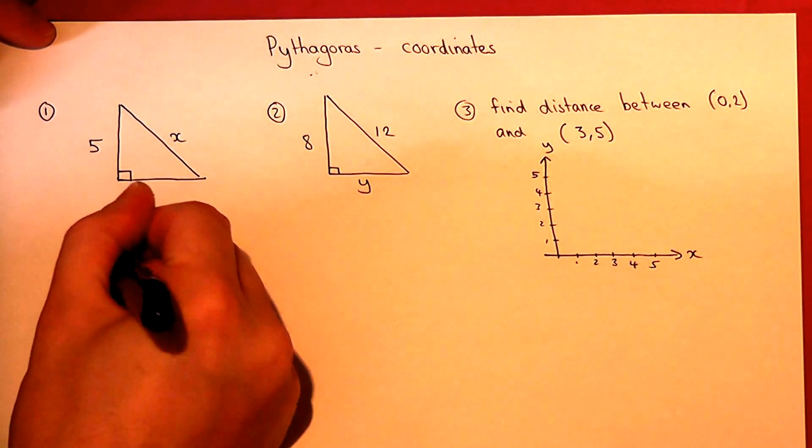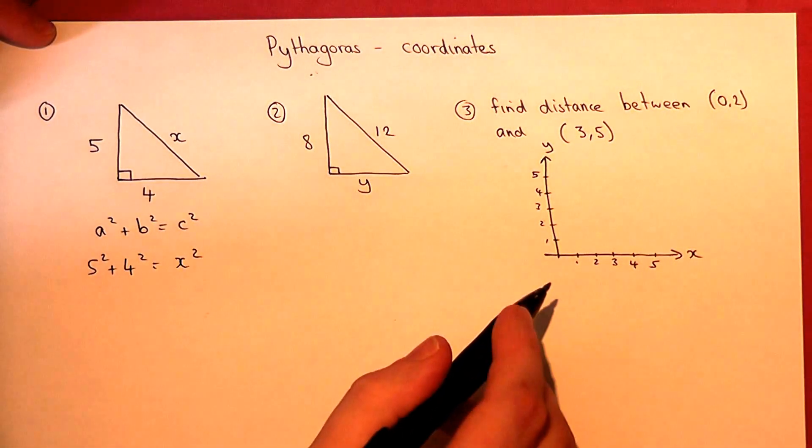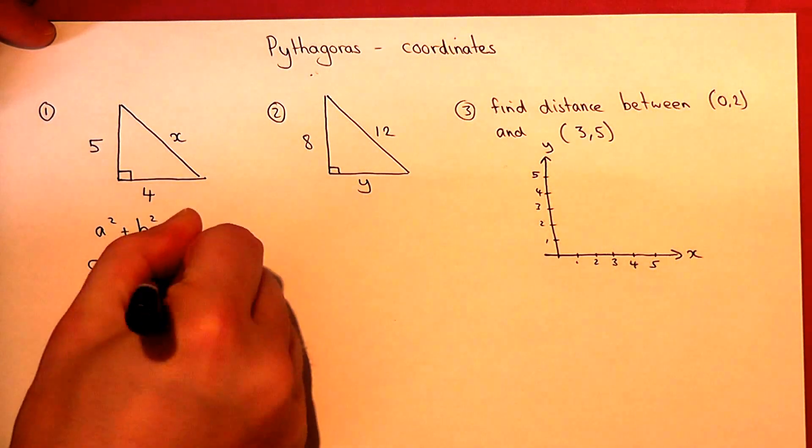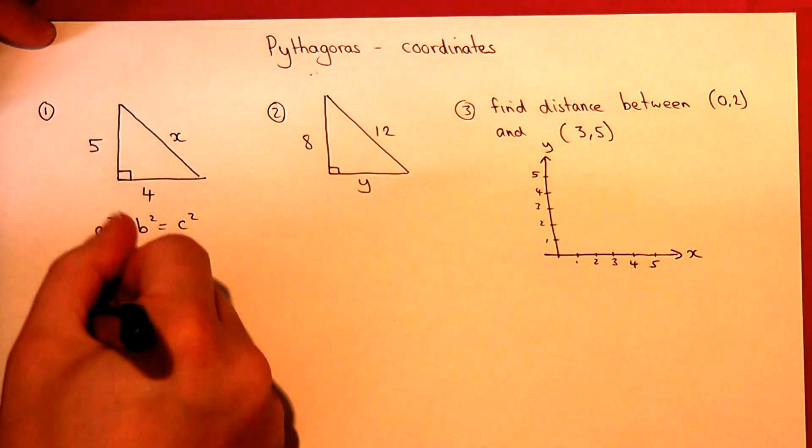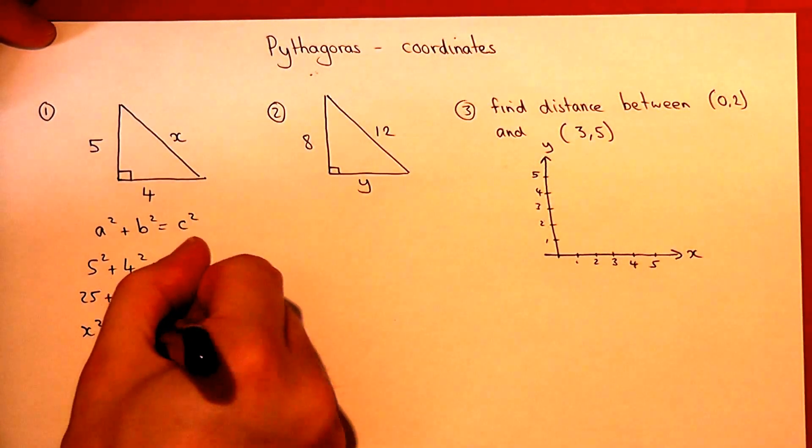So in this case, 5 squared plus 4 squared equals x squared. Now 5 squared is 25, 4 squared is 16, so therefore x squared is 25 plus 16, which is 41.